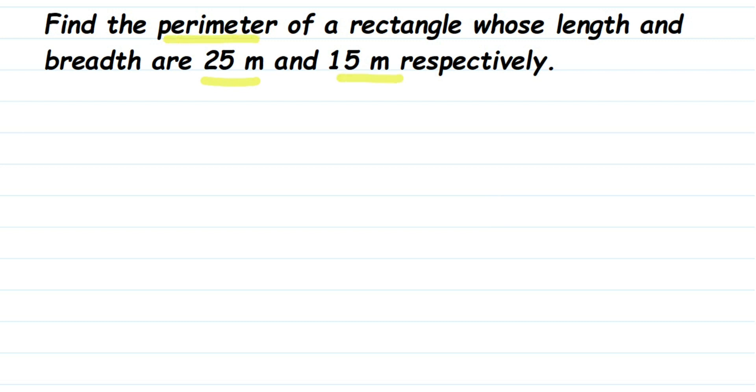Now what is perimeter of a rectangle? Perimeter is nothing but when you add all the sides of the rectangle. Suppose this is a rectangle given to us. When you add the measurements of all the four sides, that is called as perimeter.